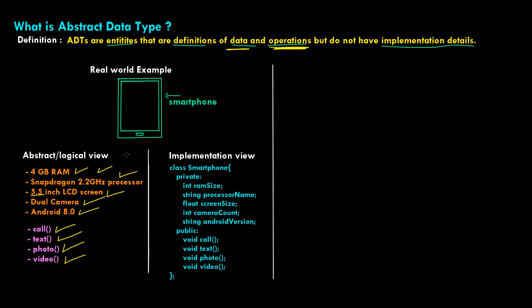When you look at the implementation view — actually implementing this in terms of code — this is how it would look in C++. You are creating a class, and within it you have different variables for the respective properties: RAM size, processor name, screen size with their respective data types such as string and float. You also have methods corresponding to the behaviors — void call, void text — and so on. If this were Java or Python, the syntax would change, meaning the implementation view changes, however the abstract and logical view is independent of the implementation.